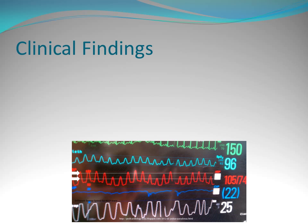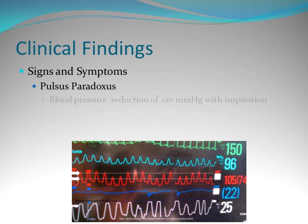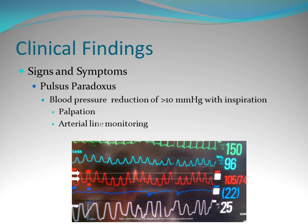You're also going to see pulsus paradoxus, which is a blood pressure reduction of greater than 10 mmHg with inspiration. You can measure that with palpation, A-line monitoring, or a normal cuff blood pressure, although A-line monitoring is the easiest to look at. You can actually visualize the decrease in blood pressure with each inspiration.